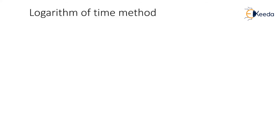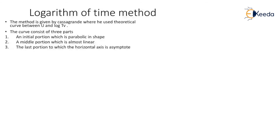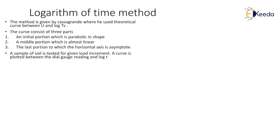The second method for the determination of coefficient of consolidation is the logarithm of time method, given by Casagrande, who used the theoretical curve between U and log Tv. The curve consists of three parts: the first part is the initial portion, which is parabolic in shape; a middle portion which is almost linear; and a third portion to which the horizontal axis is asymptote. A sample of soil is tested for a given load increment and a curve is plotted between dial gauge reading and log T.